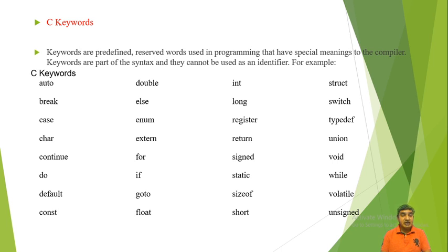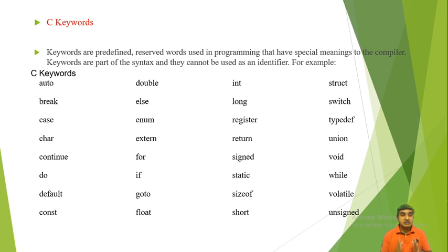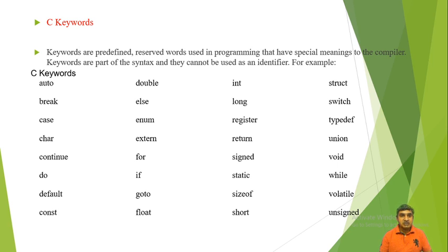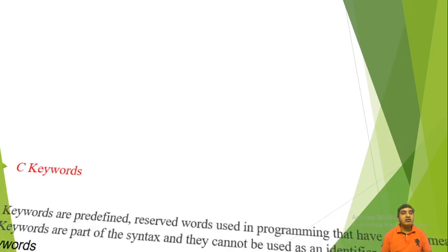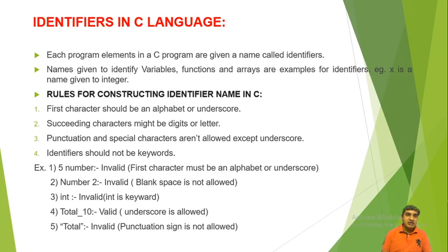For example, 'int' indicates that we are considering some integer number. 'Else' means that if the first condition is not true, then we consider a second condition. Keywords like 'do', 'if', 'goto', 'float' are all predefined reserved words that cannot be used as identifiers — they have a particular meaning predefined in the compiler.